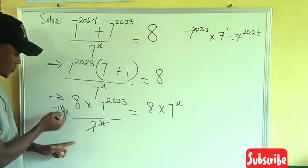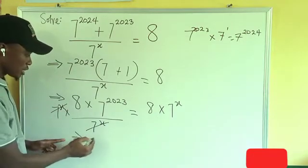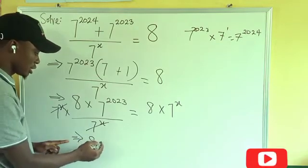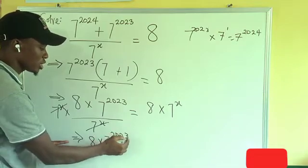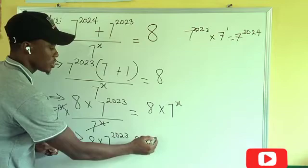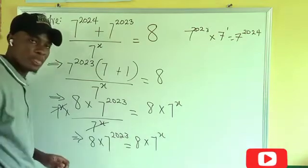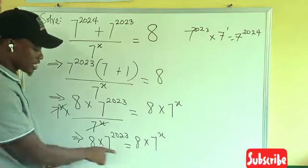So you can see that this, we cancel this one. So what we have is 8 times 7 to power 2023 equals to 8 times 7 to power x. So now from here, what's the next thing to do? We can see that 8 is here, 8 is here.